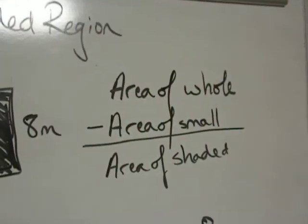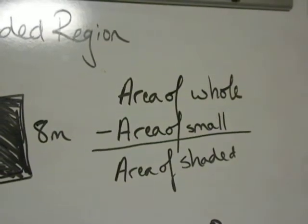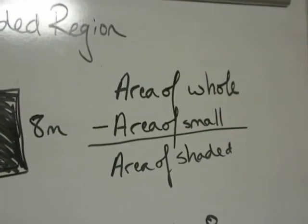Remember that to find the area of the shaded region you need to take the area of the whole shape or the larger shape and subtract the area of the smaller shape, and that will give you the area of the shaded region.